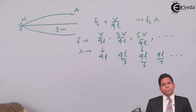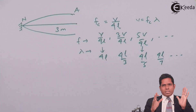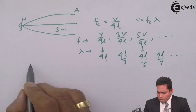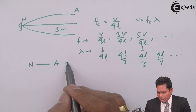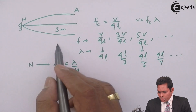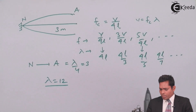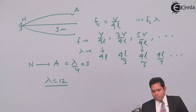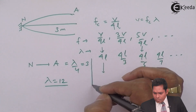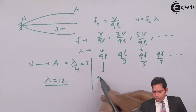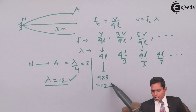This length of the string is 3 meters. Since the distance between node and antinode is λ/4, and that equals 3 meters, λ = 12. You can verify: 4L = 4 × 3 = 12, which is possible. So λ = 12 is a valid wavelength for the fundamental mode.